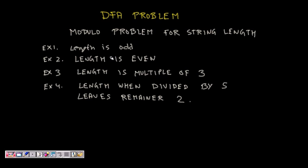In this lecture, we will look at some DFA problems which involve the modulo operation. It will be something like the length of the string is odd, the length of the string is a multiple of 3, or the length of the string when divided by 5 leaves a remainder of 2. So how to solve such problems? Let's look at these problems.